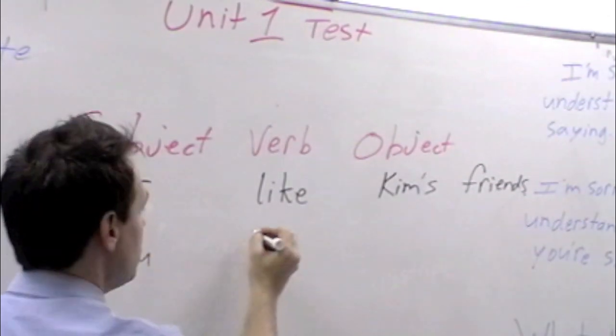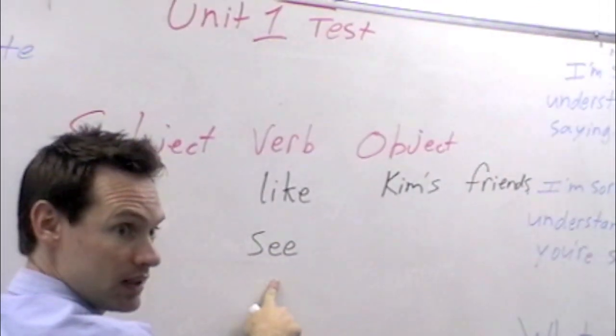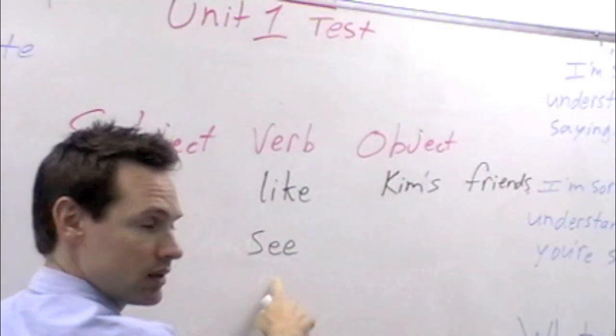Can you spell it? S-E-E. Good. And we can say S-double-E. Say it together. Double. Double-E. Double-E. Good.